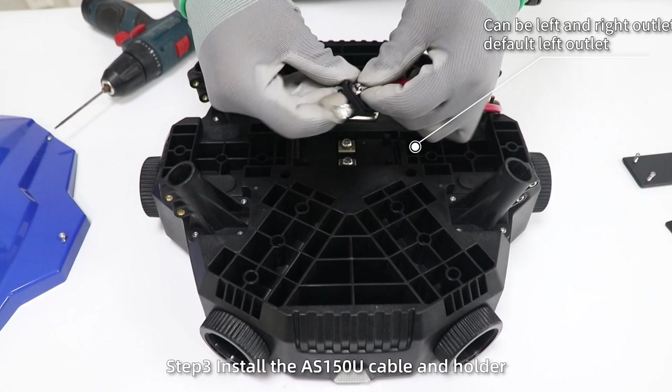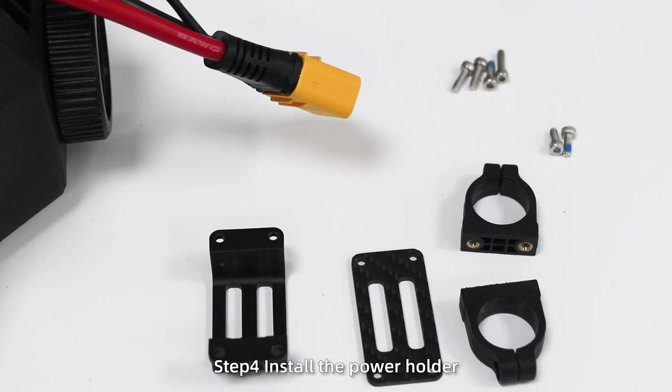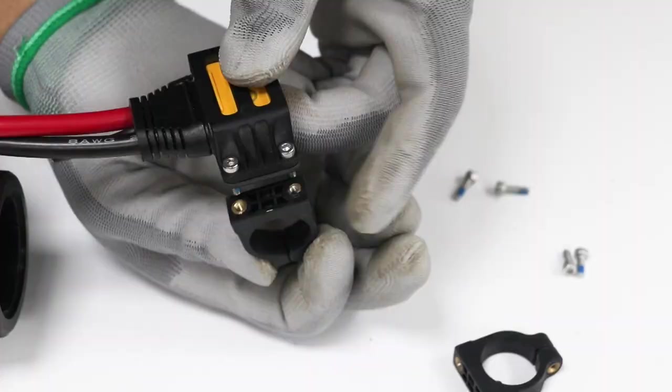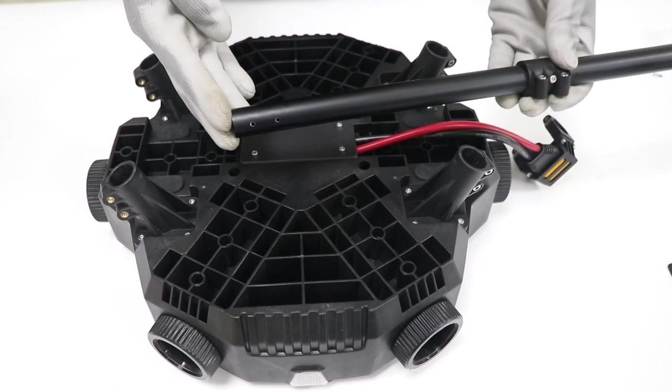Step 3: Install the AS150U cable and holder and fix it on the drone body. Please note the positive and negative. Step 4: Install the power holder. Do not tighten the screws enough. Then restore the cover.